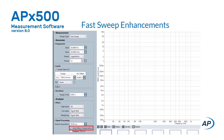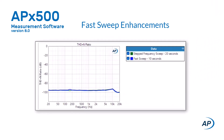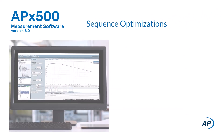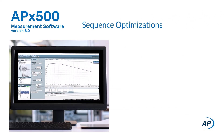Auto delay compensation is selected by default but can be turned off for a known delay and then set manually. For most devices, fast sweep-based measurement of THD+N is at least twice as fast as conventional stepped frequency sweeps. Performance has also been optimized to accelerate sequence execution, improving speed when switching between measurements or adding measurements to a sequence.